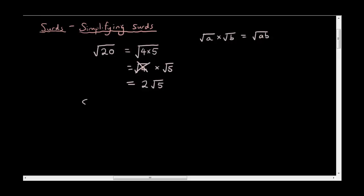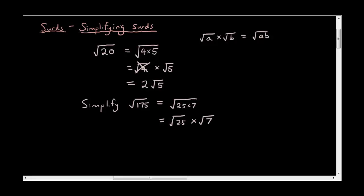Ok, let's try to simplify the square root of 175. See if you can do that and come back when you're done. So the two numbers I've thought of are 25 times 7, which gives 175. Then what I'm going to do is separate them out into two surds: square root of 25 times square root of 7. The square root of 25 is 5, so this is equal to 5 times the square root of 7.